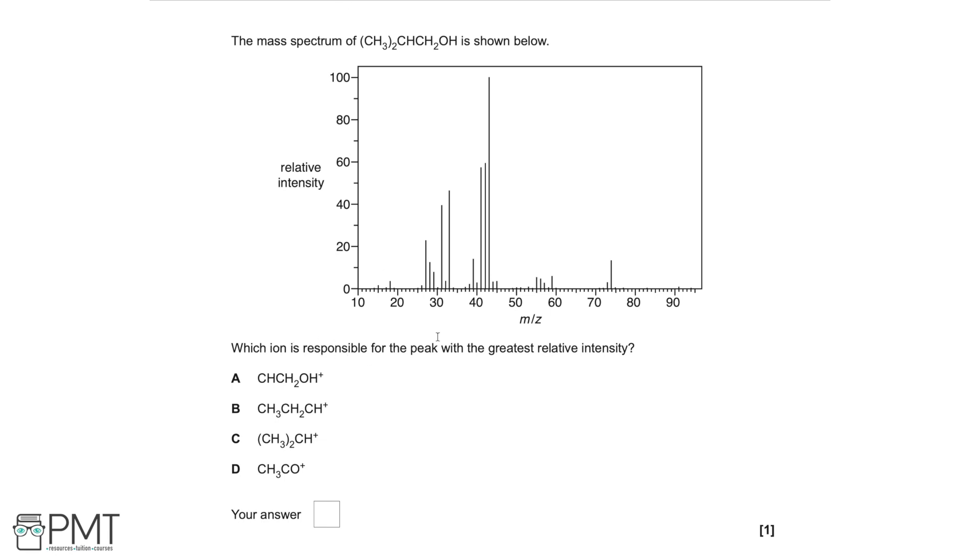So which ion is responsible for the peak with the greatest relative intensity? Let's identify that peak first. That's going to be the peak that has the tallest peak, the one that's largest on the y-axis. That's the largest y-axis value since the y-axis is relative intensity. So this peak is at an m over z of 43.